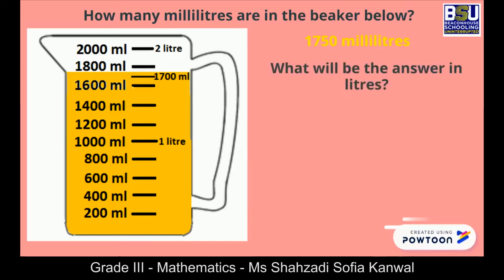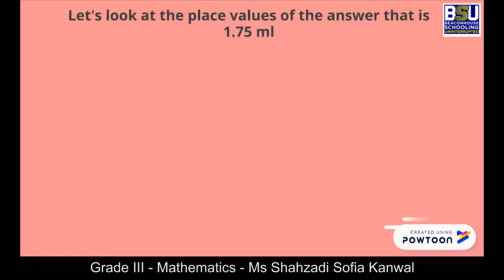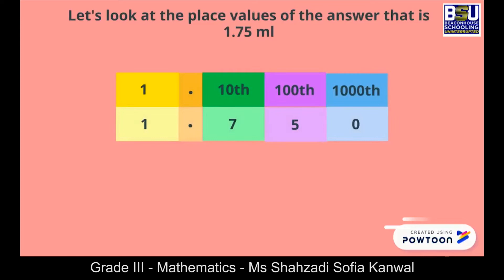So what will be the answer in liters? Since 1000 milliliters is equal to 1 liter and 750 milliliters is equal to 0.75 liters, we will add both of them together to get 1750 milliliters, which is 1.75 liters. Well done. Let's look at the base value of the number, that is 1.75 liters.